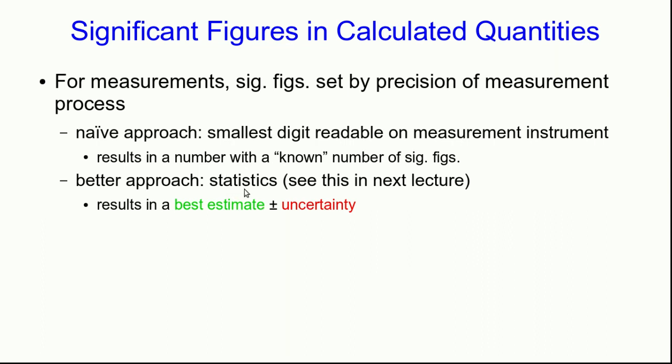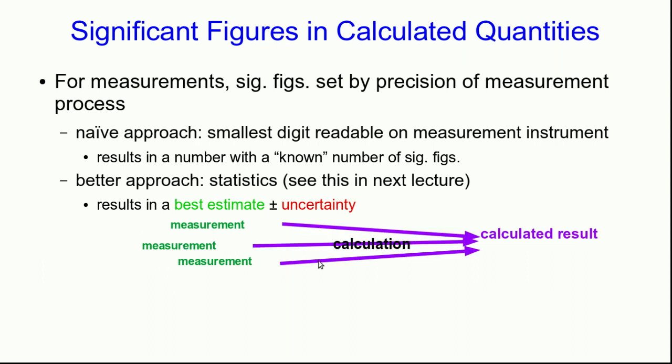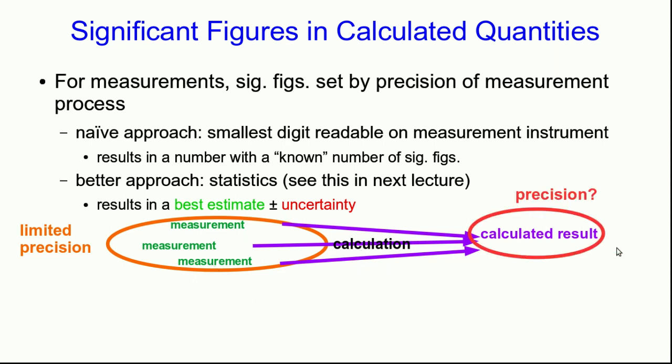But now suppose we're going to take a bunch of measurements and calculate some other quantity from it. That calculated quantity will inherit uncertainty from the measurements that went into the calculation. So we need to know how we take a number of measurements, carry them through a calculation to get a calculated result. And now since the measurements have limited precision, we want to know what the precision of the calculated result is.